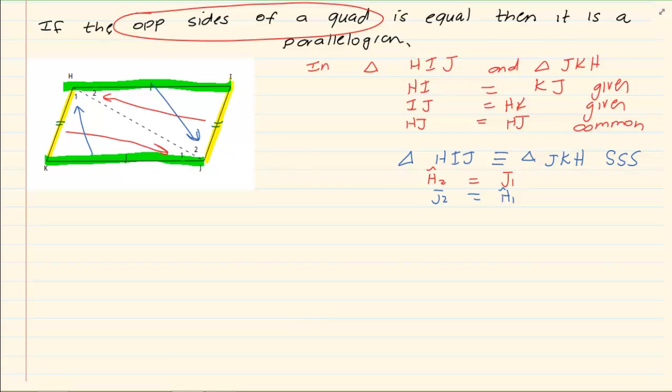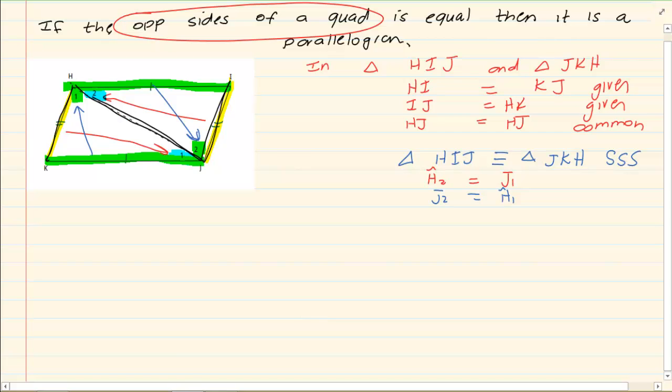Now if you look at the drawing, we have that H2 is equal to J1. That is a deduction from our congruency. As soon as you prove congruency, you can start saying the angles are equal. Then we have that H1 is equal to J2. Now look at what is happening. If you take here, what can you tell me about J2 and H1? J2 and H1 are forming alternate angles. Can you see the Z? Therefore, KH is parallel to IJ.